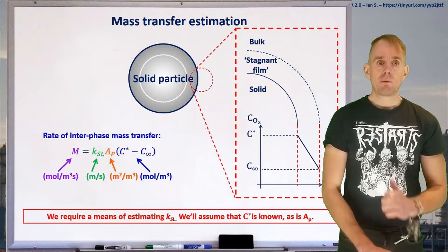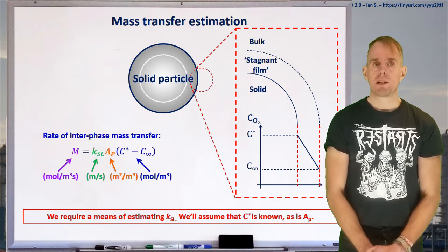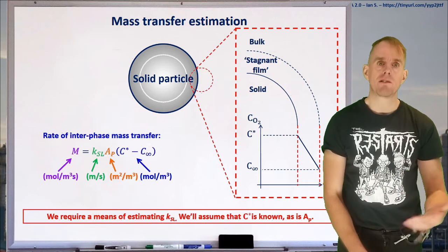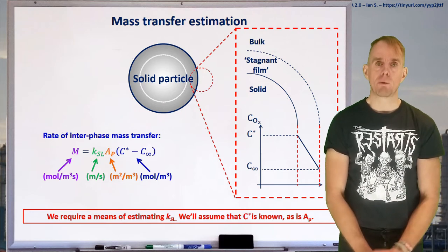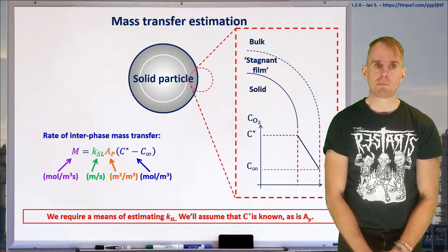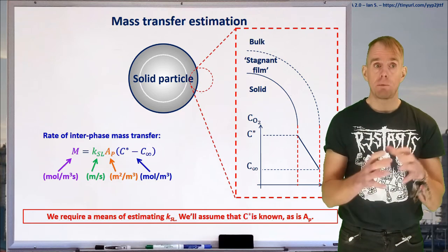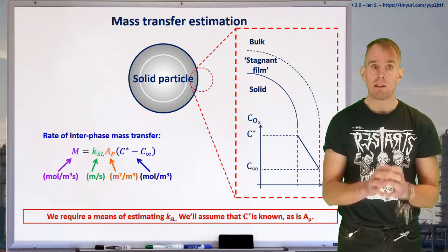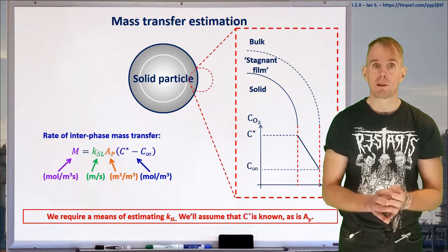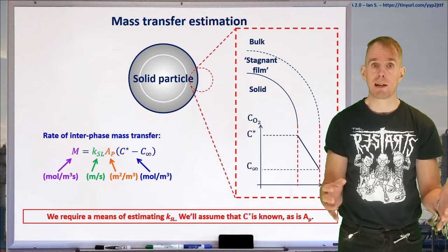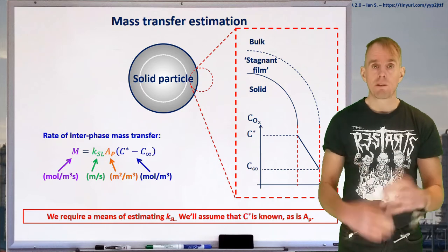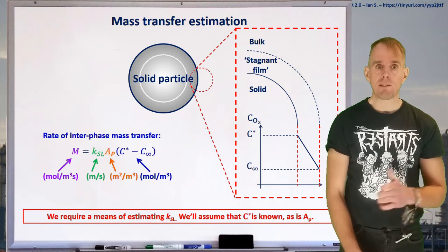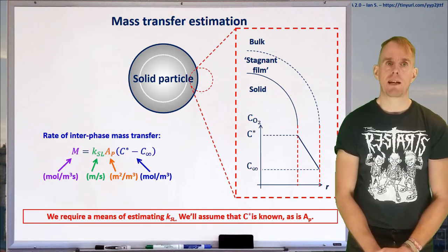Now, we're going to assume that we know that concentration gradient. We can work it out in a very similar way as to how we worked out things for our gas-liquid systems in the last lecture. We're also going to assume that we know our volumetric surface area. If we know the number of particles that we've got, and a measure of particle diameter, we can estimate what that parameter is. So let's think about our mass transfer coefficient, KSL.